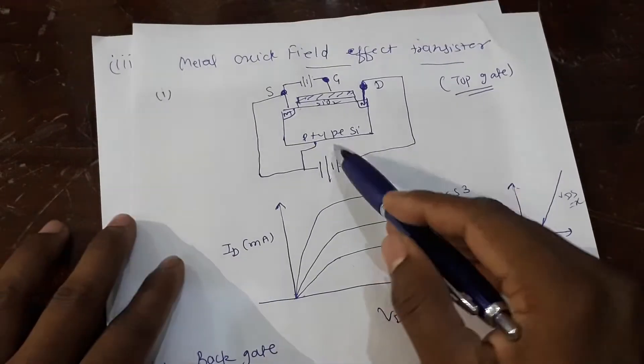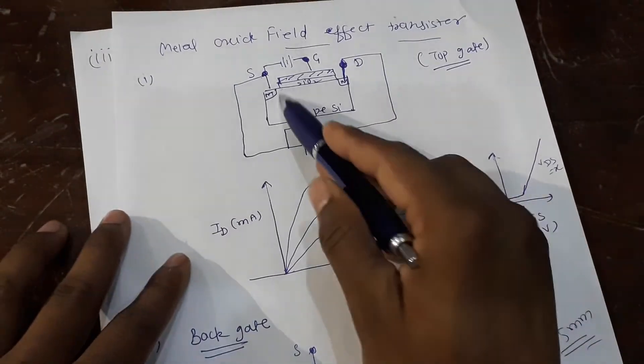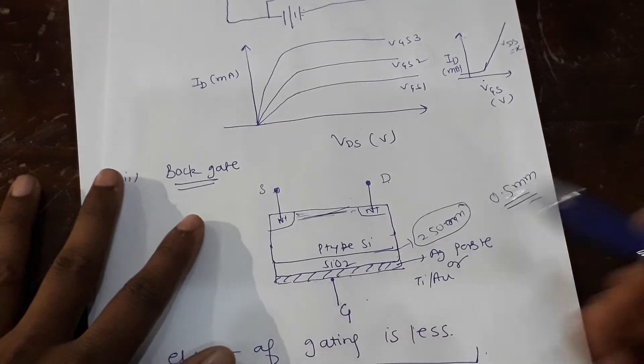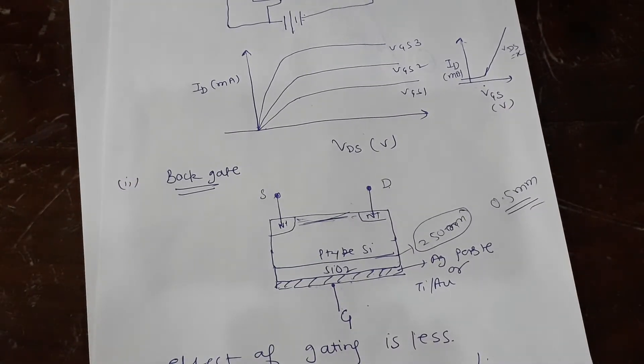And what we talked about here in this system is called—when there is a top gate over all—it's called global gate. So this back gating is also global gate. So I think it should be clear to you what is top gate, back gate, side gate, and these kinds of gates. That's it, thank you.